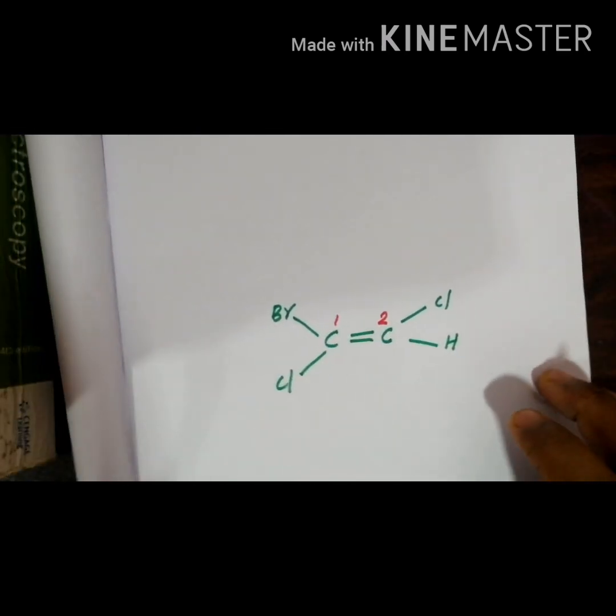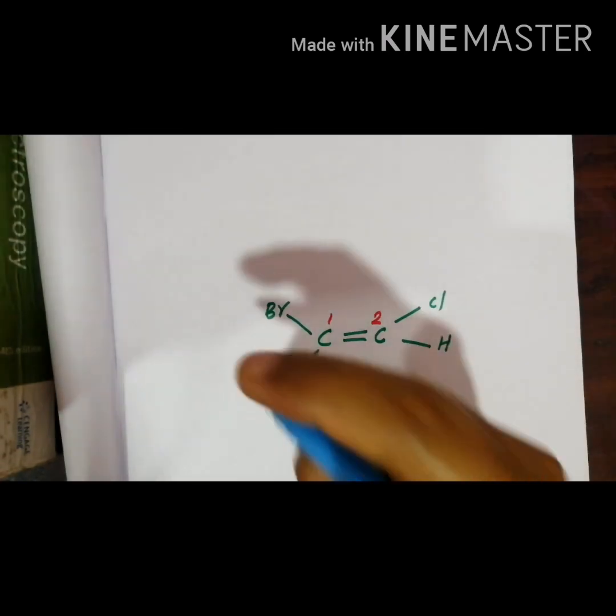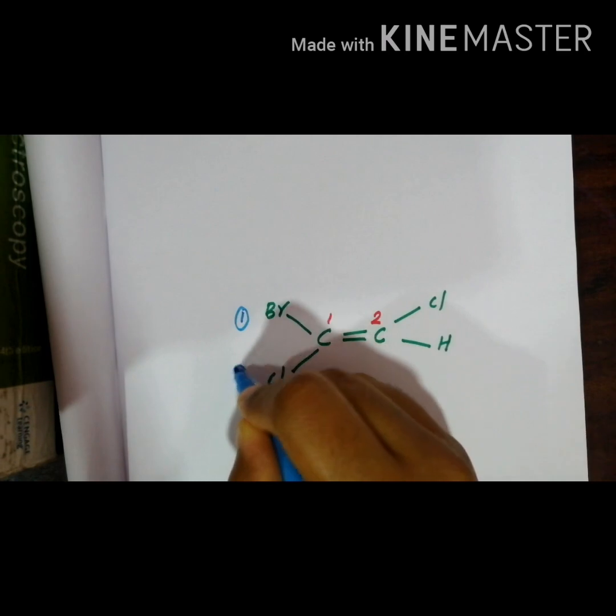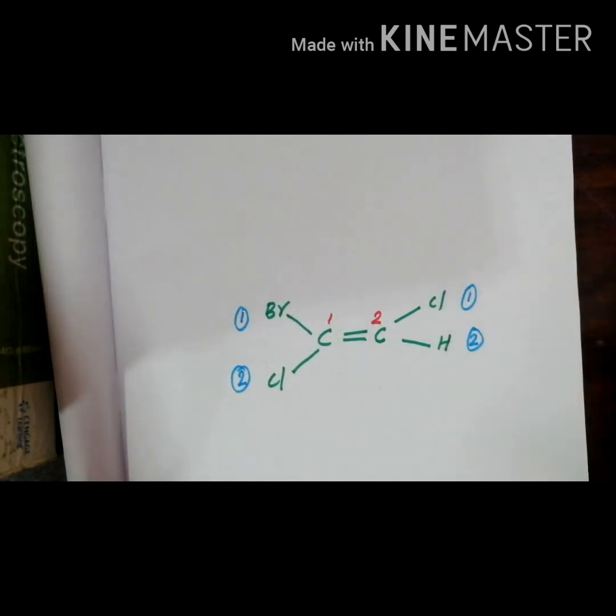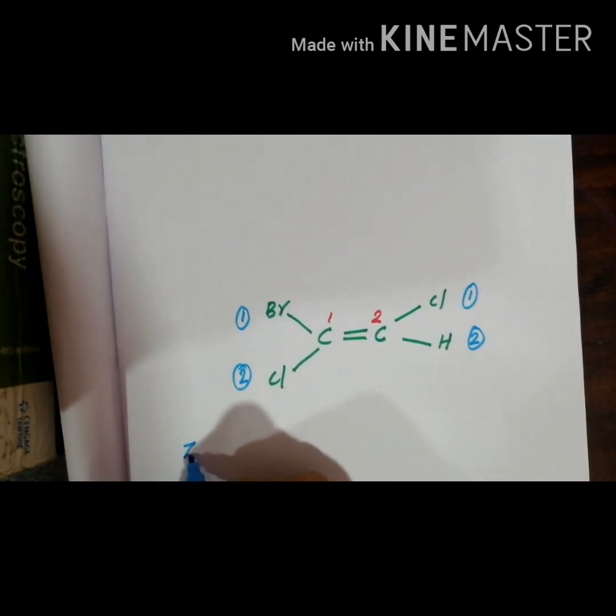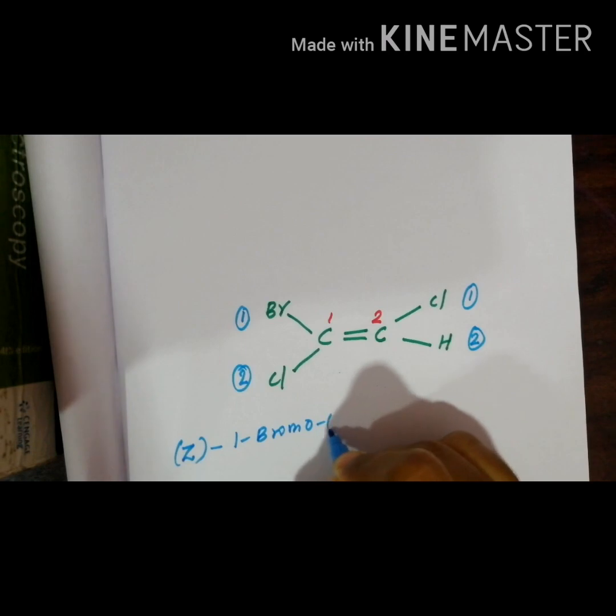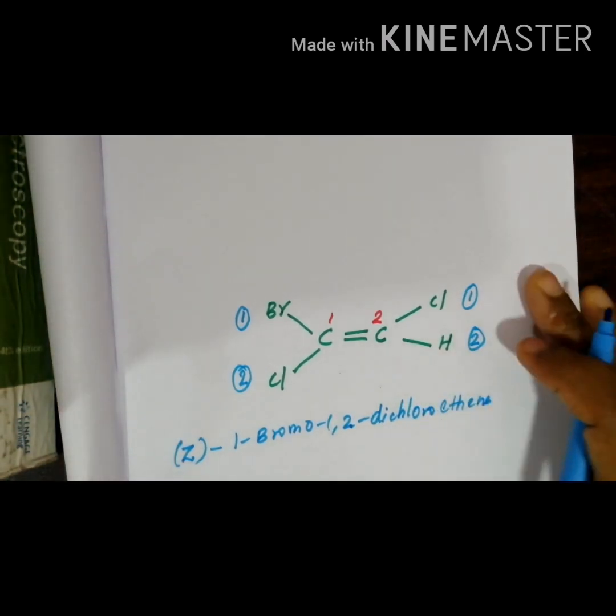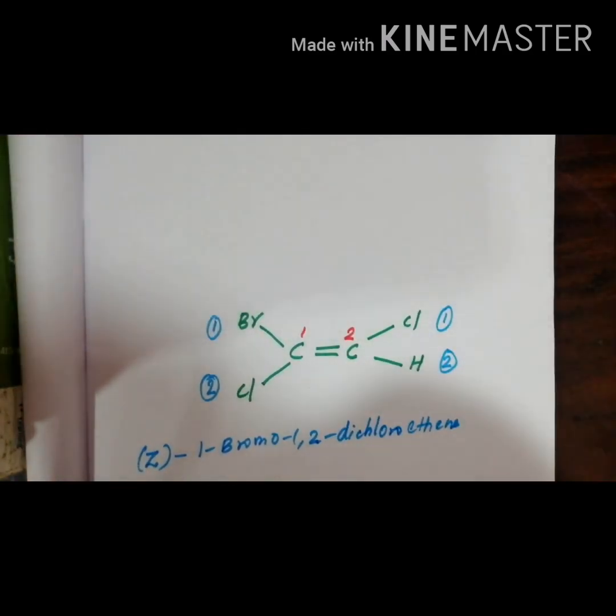Then another example, the same compound you can write in this way also. I can directly go to the numbering 1, 2, 1, 2. Priority groups are on the same side 1, 1, 2, 2, then this is Z, Zusammen same side. Its naming is 1-Bromo-1,2-dichloro-ethene. This is the examples we are doing in case of E and Z notation.